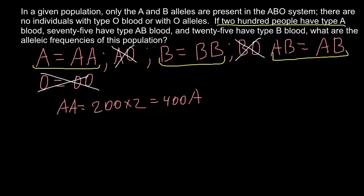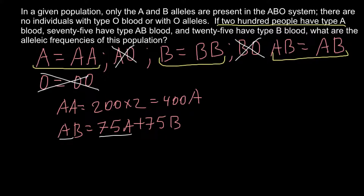We also have 75 people whose genotype and phenotype is AB. That means they have 75 alleles A plus 75 alleles B. Right now we are interested only in finding the number of alleles A. So the total number of alleles A is 75 from phenotype AB plus 400 from genotype AA, giving us 475 alleles A.